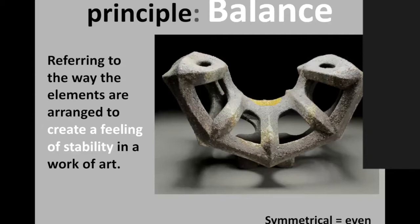Balance deals with how the elements are arranged to create a feeling of stability in an artwork — how lines, colors, shapes, and forms come together to create that sense of stability. Think of it like a seesaw: one kid on one side, one on the other. If one kid is a lot bigger, the seesaw falls on that side. So it deals with physical weight — how much stuff is on either side.